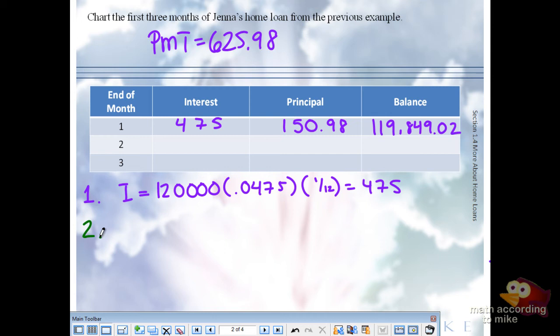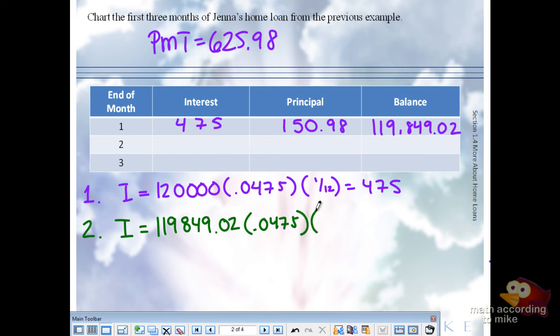We start off by finding the interest. The principal has changed to the $119,884 number. The interest rate's the same. The period is the same. We're going to start to get ugly numbers now, so since this is money, let's go to two decimal places. Just so you know, as you continue, the amount towards interest should go down, which means the amount towards principal should go up.